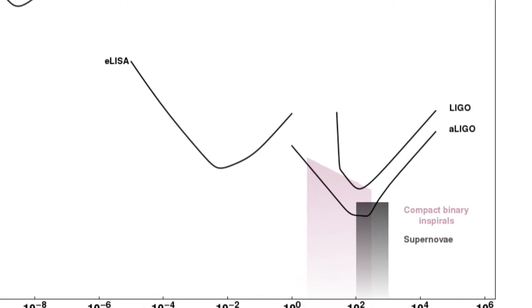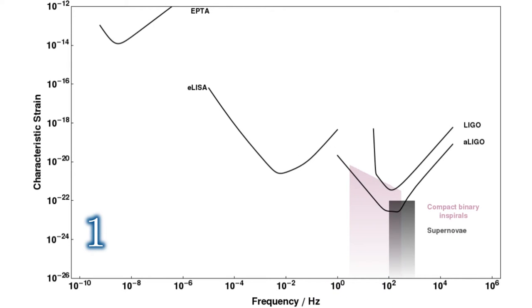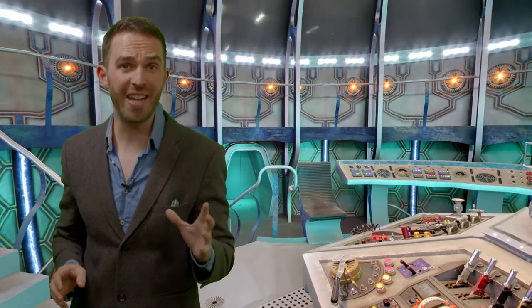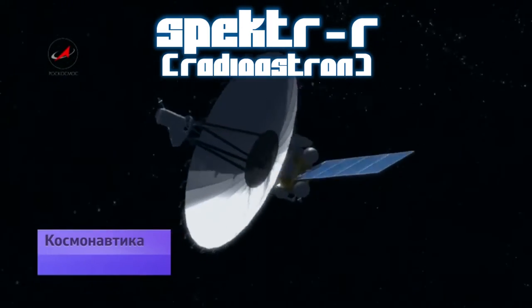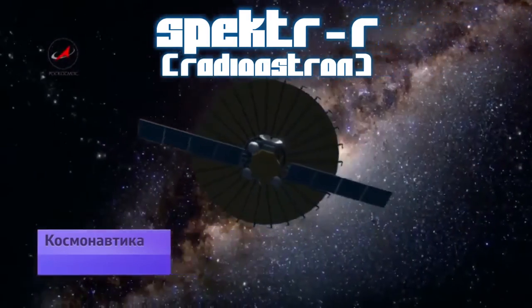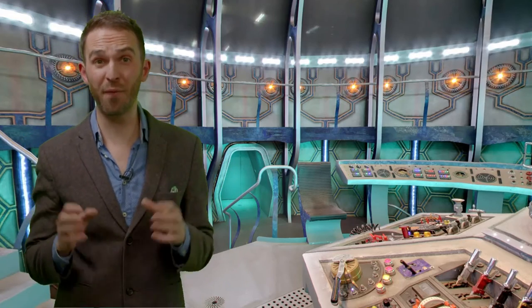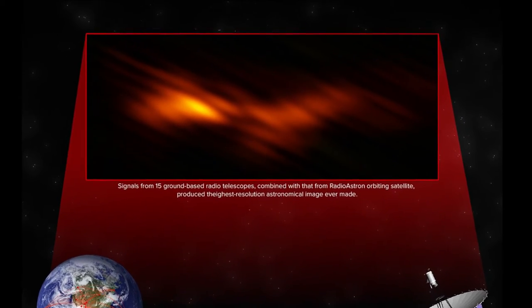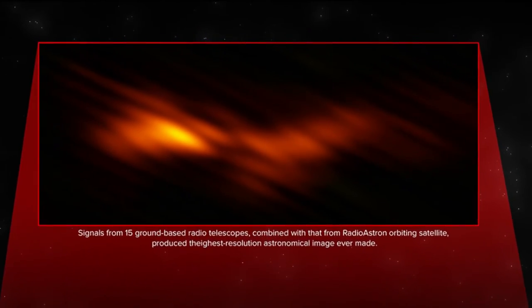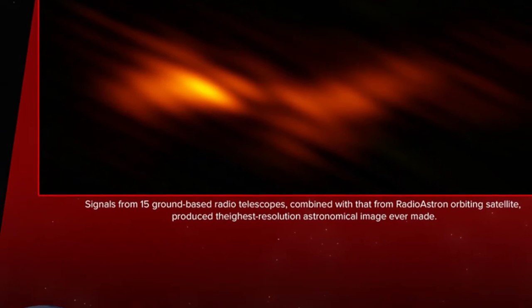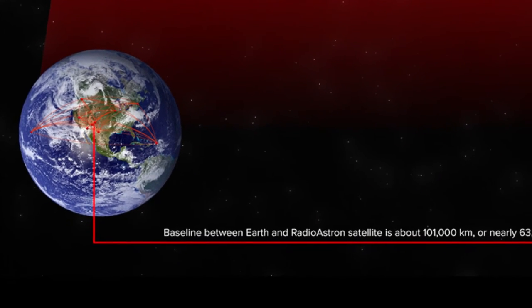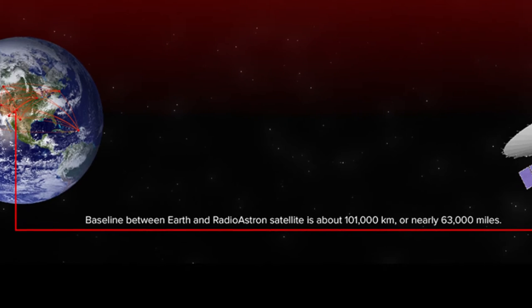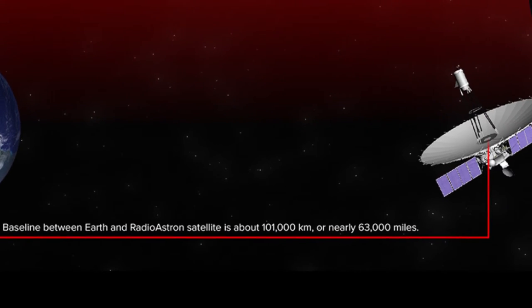A similarly impressive machine is SPECTR-R, a radio space telescope. Now by combining its observations with 15 different ground-based radio telescopes, our highest resolution astronomical image to date has been produced. The combination of all that data gives you an image equivalent to having a single telescope eight times the diameter of the Earth.